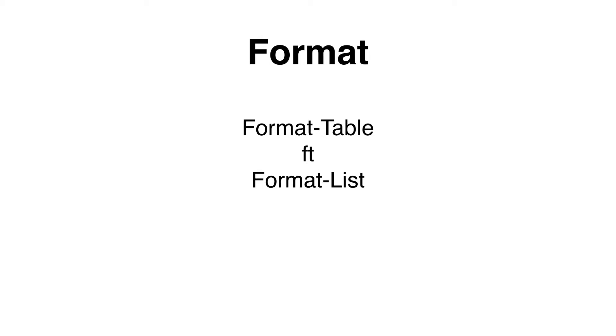We can use format-table to output information as a table. This is the default behavior of PowerShell — if you don't specify how you would like the output to be formatted, it will format it as a table. The alias for format-table is FT. We can also format the information as a list; the alias for that is FL. Another way that works similarly to format-table is select-object, where you can specify the object properties you would like to display. The alias for that is select.